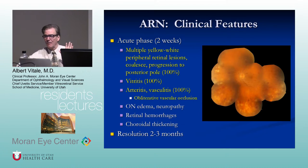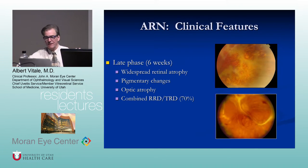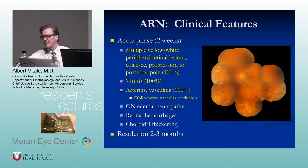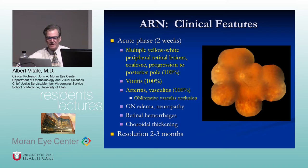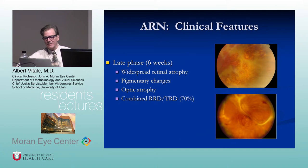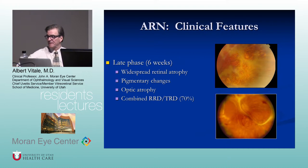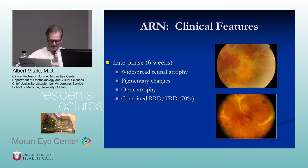The hallmarks of ARN are retinitis, vitritis, and occlusive vasculitis — usually arteritis. Those are the diagnostic criteria elaborated by the American Uveitis Society. Other findings include optic nerve edema, retinal hemorrhages, and choroidal thickening. If untreated, it resolves in two to three months, but with widespread necrosis, multiple holes, and a very high incidence of tractional retinal detachment — usually combined tractional-rhegmatogenous, which is very difficult to fix. Optic atrophy is also an important sequela.